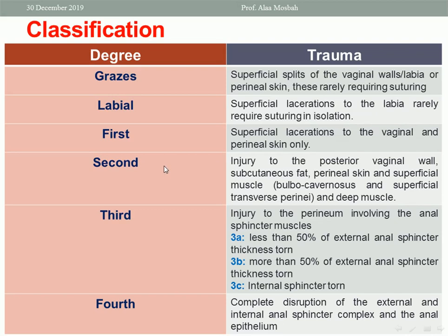Second degree perineal tear includes the vagina, fascia, skin of the perineum, and muscles of the perineum, but not reaching the anal sphincter. Third and fourth degree tears reach the anal sphincter. Third degree can be divided into 3a, 3b, and 3c: if external anal sphincter injury is less than 50% it is 3a; if more than 50% it is 3b; if it includes the internal sphincter together with the external sphincter it is called 3c.